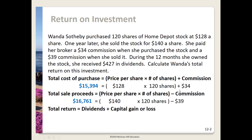You might ask: why did we add the commission in the first formula but subtract it in the second? In the first formula, this is the total cost Wanda incurs — the cost of the shares plus the cost of the commission. In the second formula with the sale proceeds, this is the money she gets back from selling her shares. But before she gets that back, she has to pay the $39 commission, so it gets subtracted.